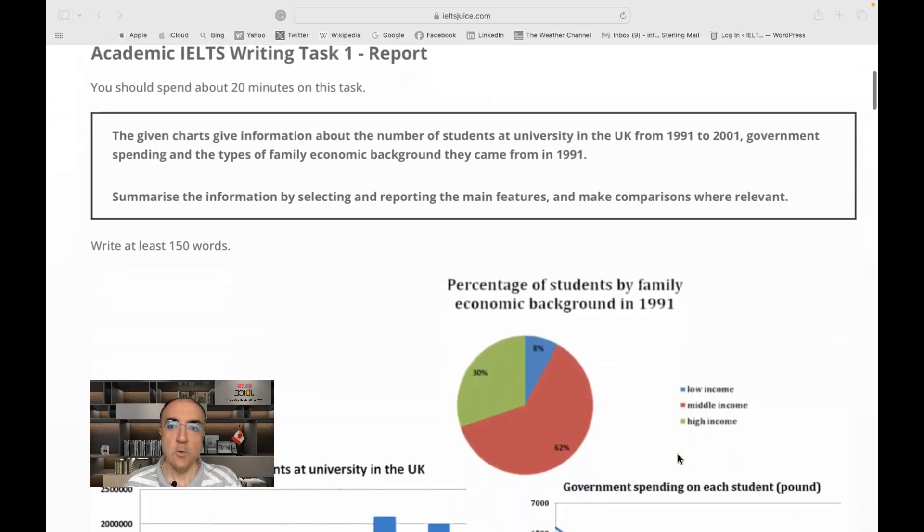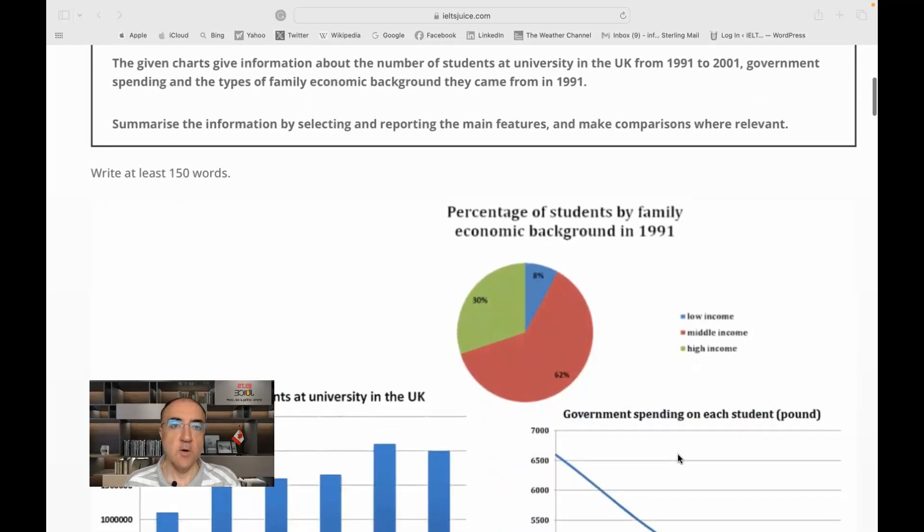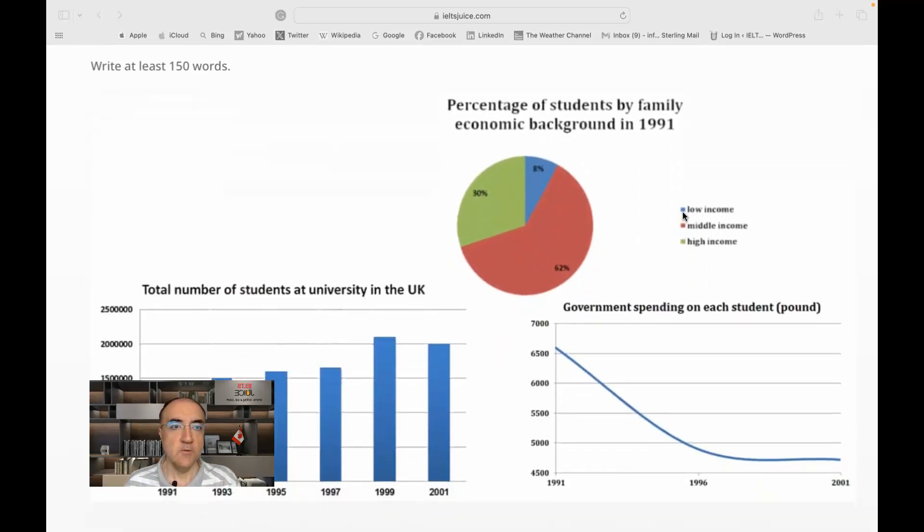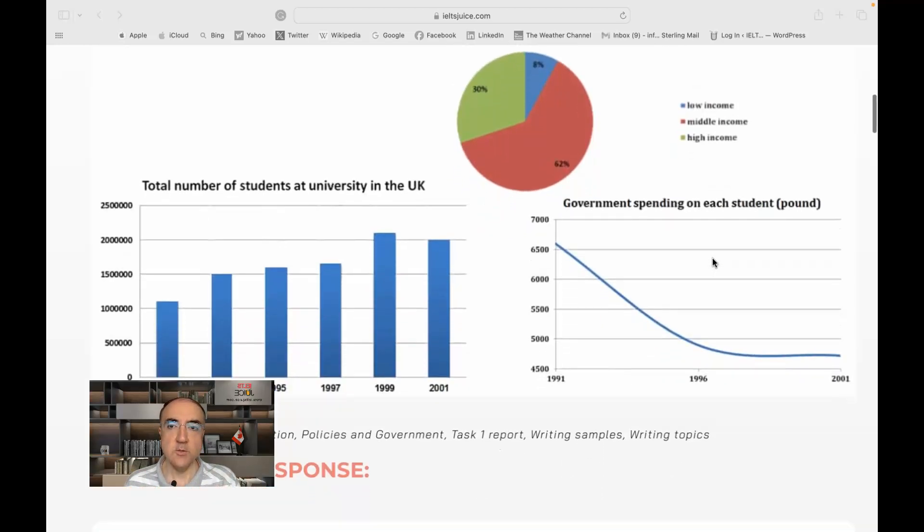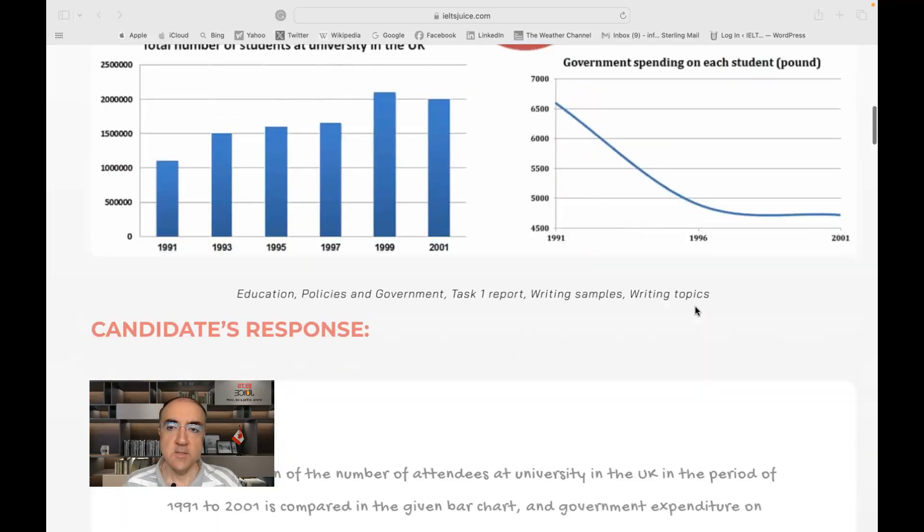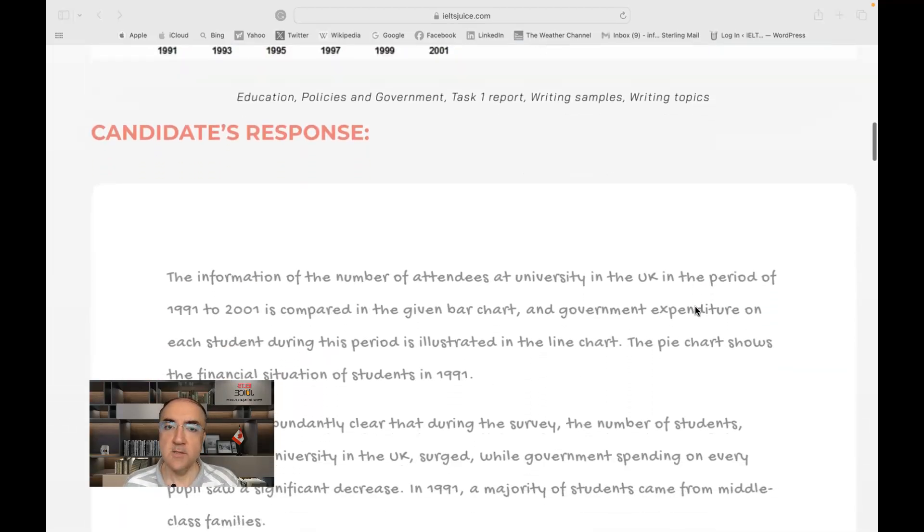So as I can see we have a pie chart that focuses only on one year and with three income brackets and then there are two different diagrams, a bar chart and a line graph. So let's see what the response tells us.